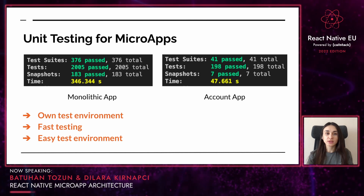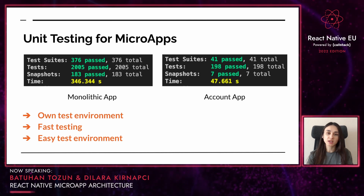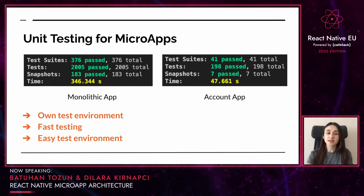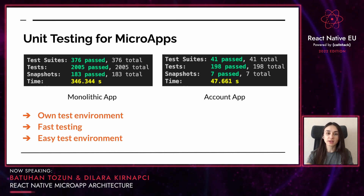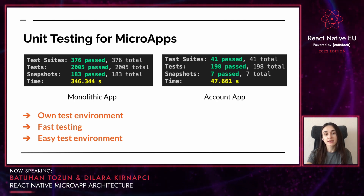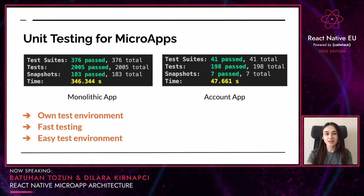On the testing side, we use Jest and the React Native Testing Library. In our monolithic application, we had too many test cases because all domains were in one repository. When we divided into microapps, each microapp has its own test environment and test cases run much faster. For example, in our monolithic application running all test cases took almost 350 seconds, but when we run for the account application it takes almost 50 seconds — clearly less because it only has its own test cases. This makes it much easier to run test cases in the development environment.